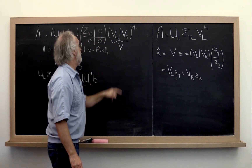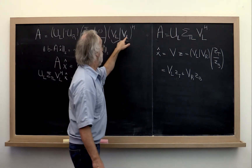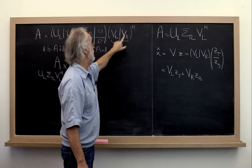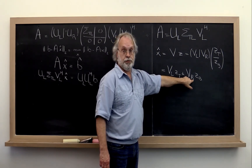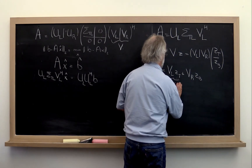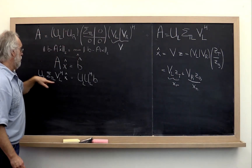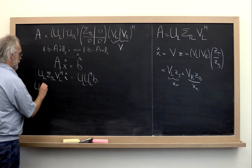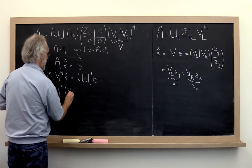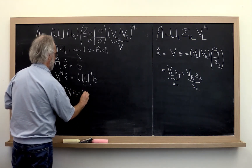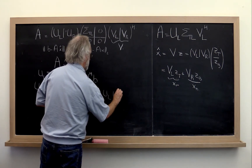The column space of V-left equals the row space of A, so this is a vector in the row space of A. The column space of V-right equals the null space of A, so this is a vector in the null space of A. If we plug that in, we get UL sigma top-left times VL Hermitian transpose times (VL z-top plus VR z-bottom) equal to UL UL Hermitian B.